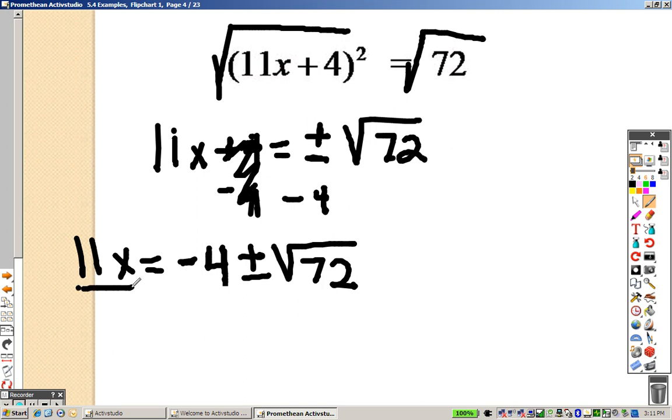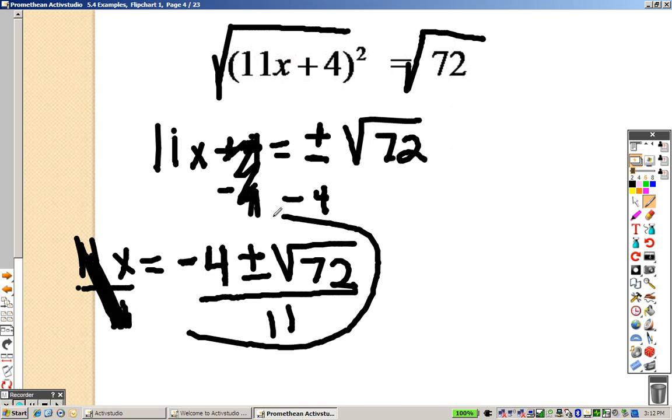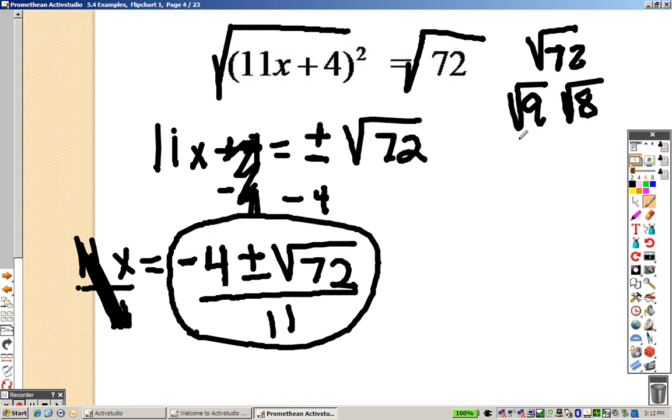Since it's 11 times x, now I can divide both sides by 11, so they're cancelled out. So this is what I have, except here's what I want you to do. Can you simplify square root of 72? Well, 72 I can rewrite as 9 and 8, and 9 simplifies to a 3.